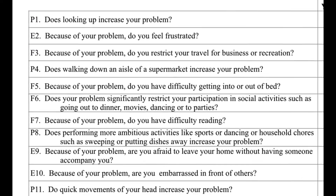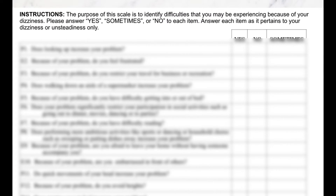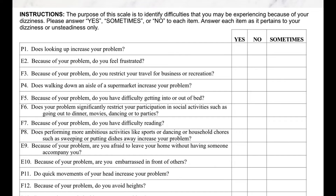Here's how a patient scores this. The instructions read: 'The purpose of the scale is to identify difficulties that you may be experiencing because of your dizziness. Please answer yes, sometimes, or no to each item. Answer each item as it pertains to your dizziness or unsteadiness only.' So if they have neck pain, it shouldn't be related to the neck pain — it should be due to the dizziness or unsteadiness. For example, question number one says: 'Does looking up increase your problem?' — yes, no, or sometimes.